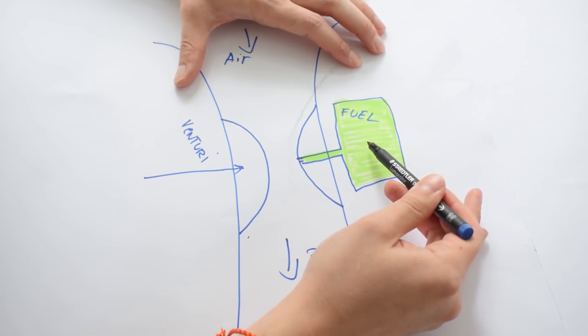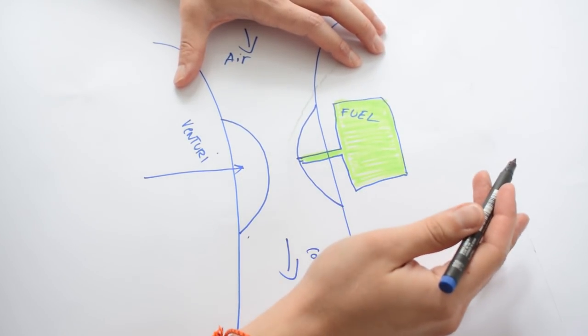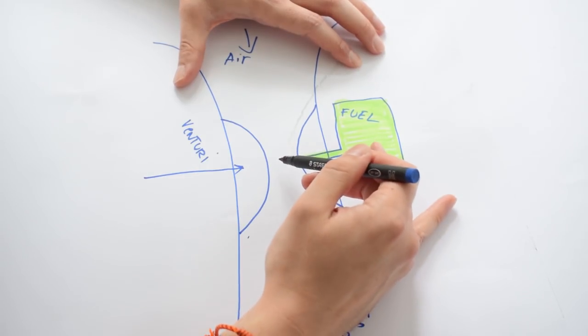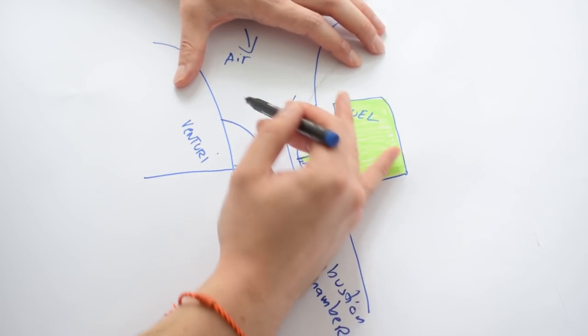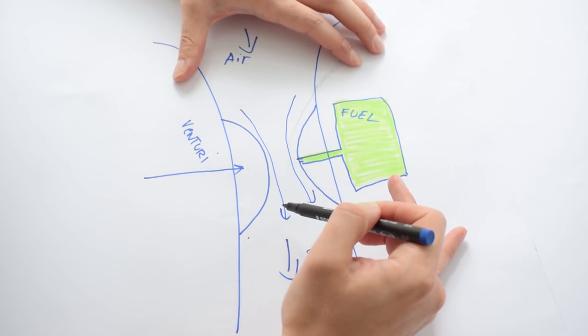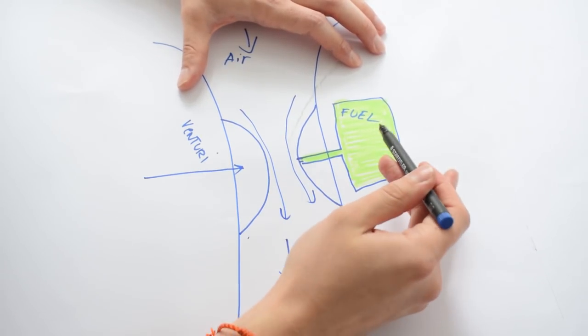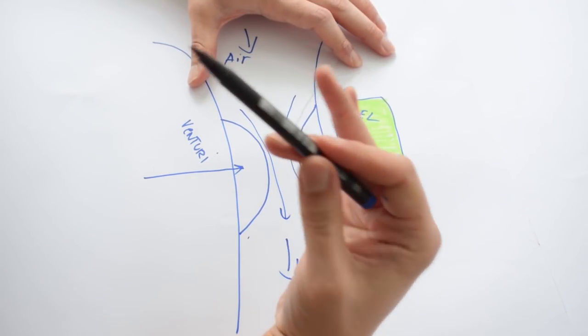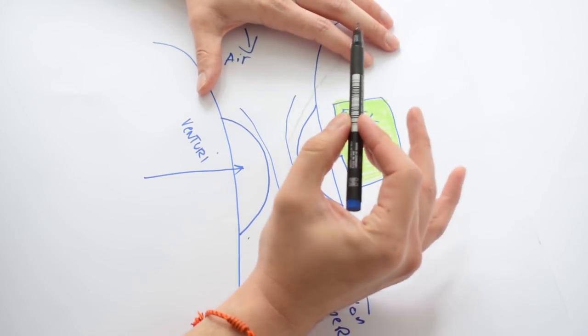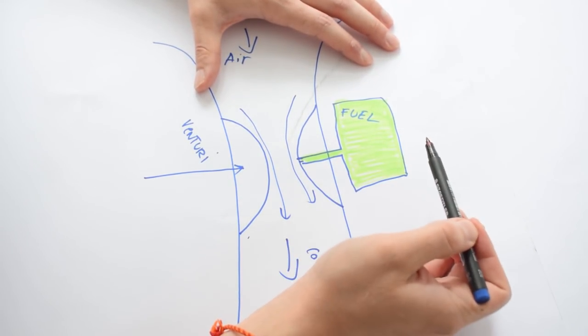Now the fuel in this reservoir is going to be at atmospheric pressure. This pressure is going to be higher than the pressure of the high speed air rushing through here. Now fluids, which both fuel and air are, have another property and that's that they always want to reach pressure equilibrium.